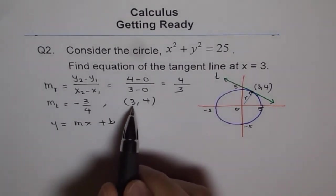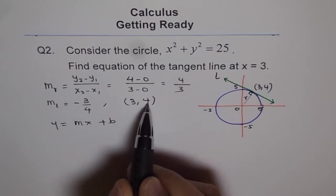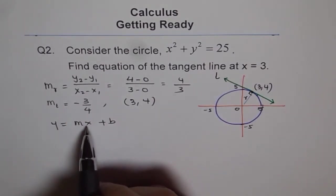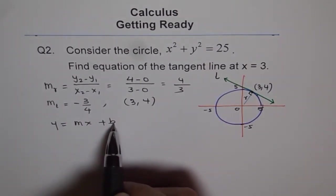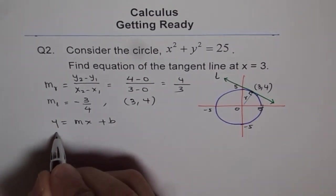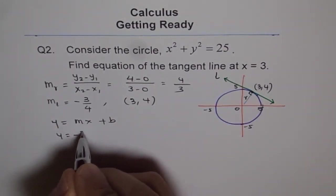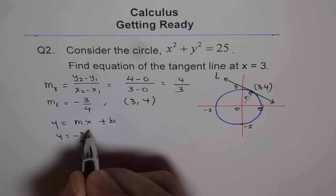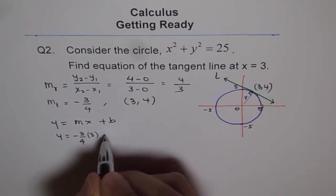So here we will plug in 3 for X, 4 for Y, -3/4 for M and calculate B. So 4 = slope is -3/4 and X is 3 for us, times 3 plus B.